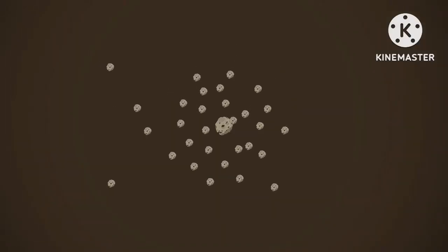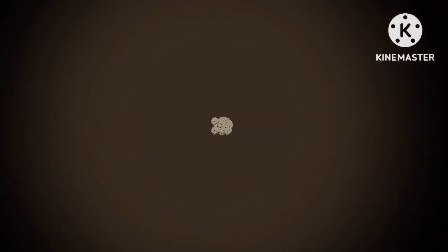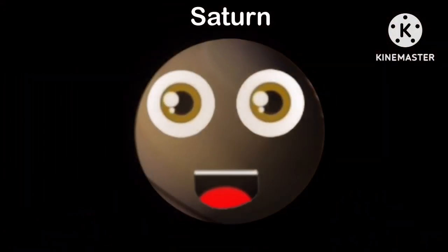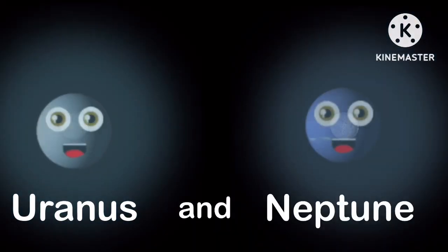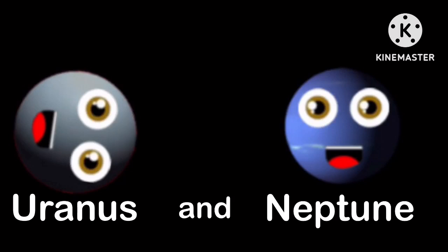The next planet that formed is thought to be the planet we all call Saturn, with the rings we see. The next two planets that formed in theory are Uranus and Neptune, giant and icy.